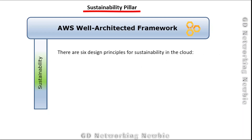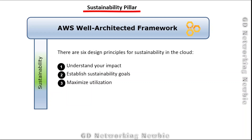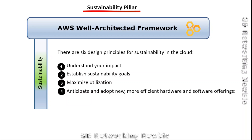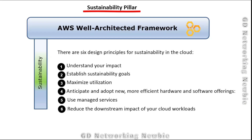There are six design principles for sustainability in the cloud: first, understand your impact; second, establish sustainability goals; third, maximize utilization; fourth, anticipate and adopt new, more efficient hardware and software offerings; fifth, use managed services; and sixth, reduce the downstream impact of your cloud workload.